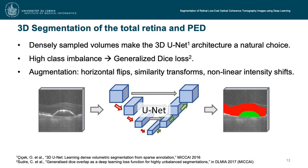Due to the densely sampled volumes of the SELF-OCT, a 3D U-Net architecture was a natural choice. To address the high class label imbalance, we used the generalized dice loss proposed by Sudre et al. Furthermore, we performed augmentations like horizontal flips, similarity transforms, and non-linear intensity shifts to avoid overfitting.